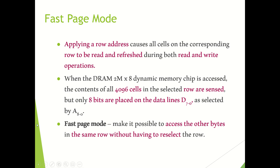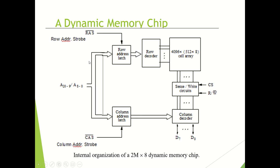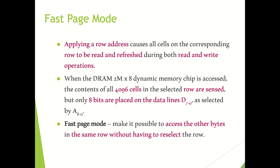Fast Page Mode works by applying a row address, which causes all the cells on the corresponding row to be read and refreshed during the read and write operation. First we specify the row address, which will activate all the cells in the selected row — that is, it will refresh all the cells in the selected row, whether we are performing a reading or writing operation.